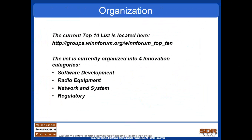Looking at the organization of the list, we have software development, radio development, network and systems, and regulatory issues organized into groups that we evaluate for gaps for inclusion in the Top 10 list. As technology advances, we find that some gaps are solved or moving from innovation into industrialization and drop off the list, allowing us to add new issues.